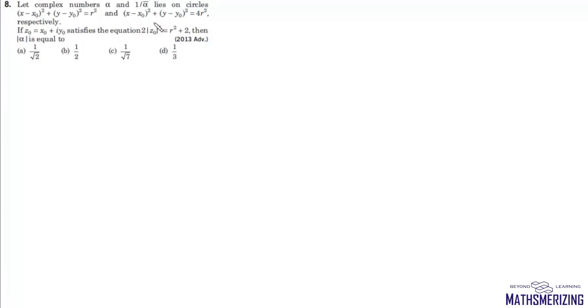The question states: let the complex numbers alpha and 1 upon alpha bar lie on circles x minus x naught squared plus y minus y naught squared equals r squared, and x minus x naught squared plus y minus y naught squared equals 4r squared respectively. If z naught satisfies the equation 2 mod z naught squared equals r squared plus 2, then we need to find the value of mod alpha.